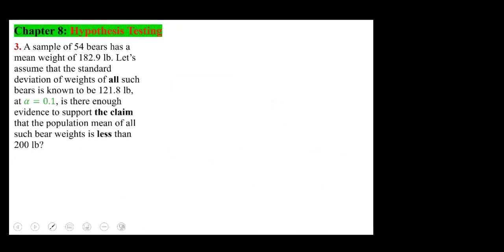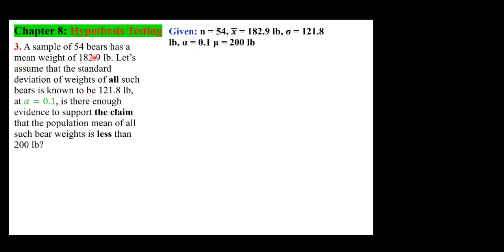A sample of 54 bears has a mean weight of 182.9 pounds. Assume the standard deviation of weights of all such bears is known to be 121.8 pounds. At alpha equals 0.1, is there enough evidence to support the claim that the population mean of all bear weights is less than 200 pounds? Given: N = 54, x-bar = 182.9 (from the sample), sigma = 121.8 (for all), alpha = 0.1, and mu = 200.